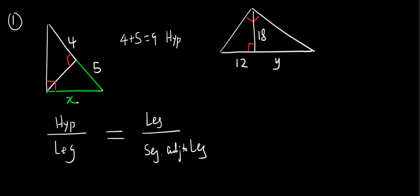Now I'm going to substitute. Hypotenuse is 9, leg is x. Make sure you put this x, the leg, on the mean part because it's geometric mean. Then, the segment that is adjacent to the leg, that is 5.